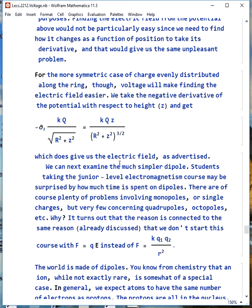Now, if we have the more symmetric case of charge evenly distributed along the ring, the voltage method will be easier. We would take the negative derivative of the potential with respect to height, so negative d/dz of this, and that would give us kQz over r squared plus z squared to the three halves. That is the electric field that we found the harder way.